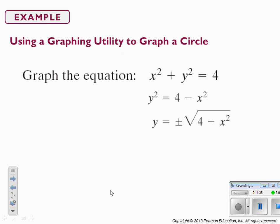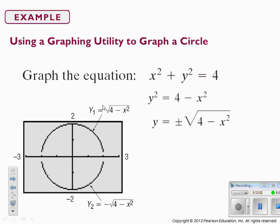If you're going to use your graphing calculator to graph a circle, you have to solve for y and graph both the positive and the negative form of your equation. In this case we would subtract x squared from both sides and then take the square root — remember when you take the square root you get plus and minus answers. The positive form will be the top part of the circle and the negative form will be the bottom part. A lot of times it will leave a gap right around the diameter portion — you just have to be okay with that.